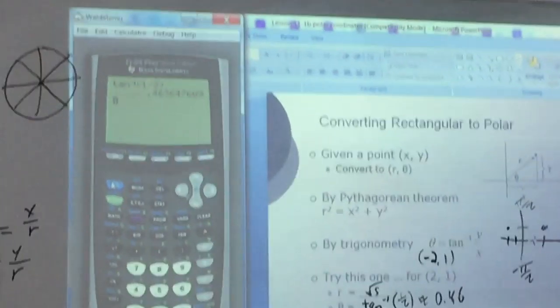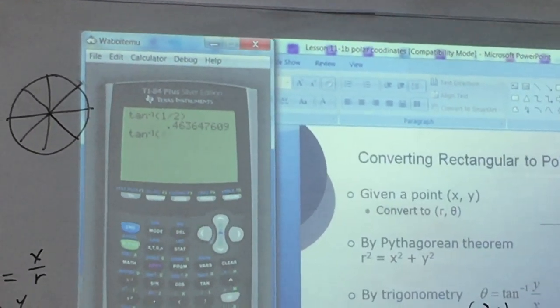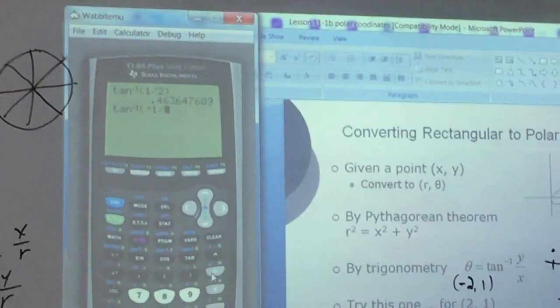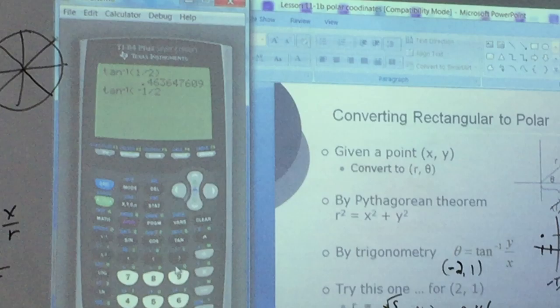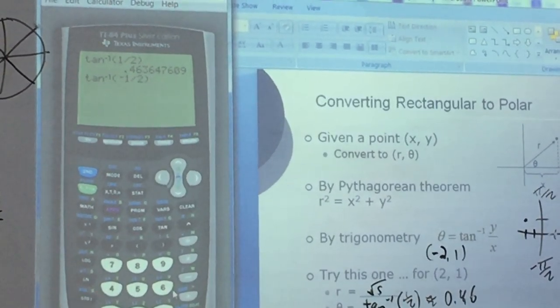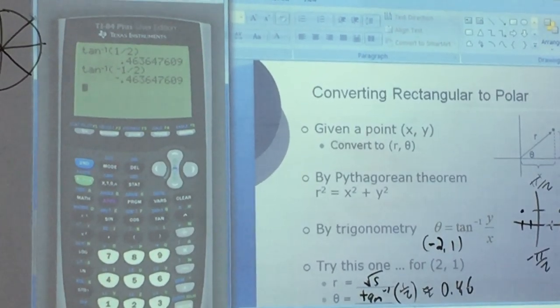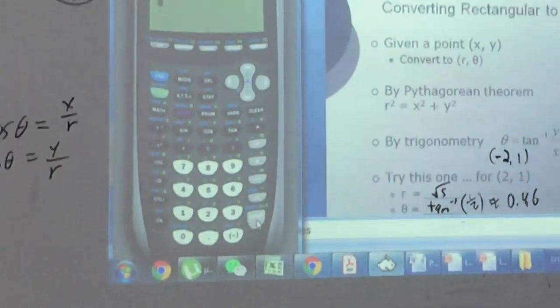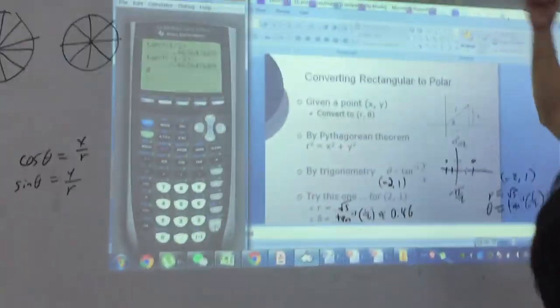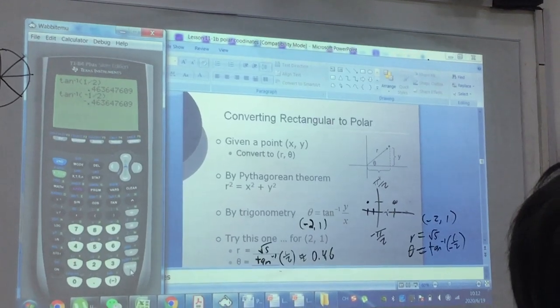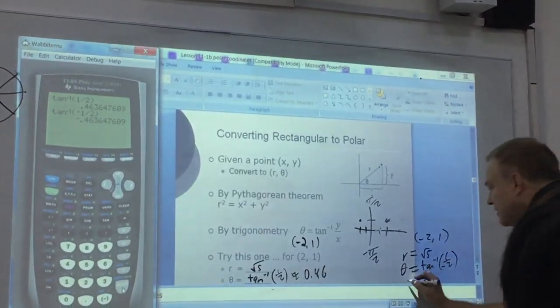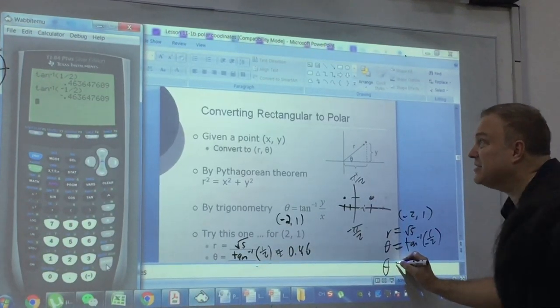So we have 2nd inverse tangent of negative 1/2. And notice we basically just get the negative of the same answer that we got before. But is that correct? No.